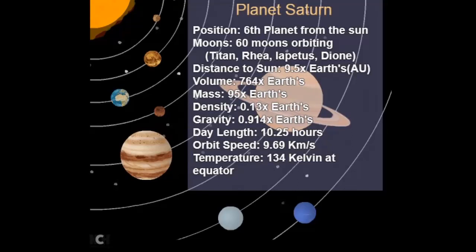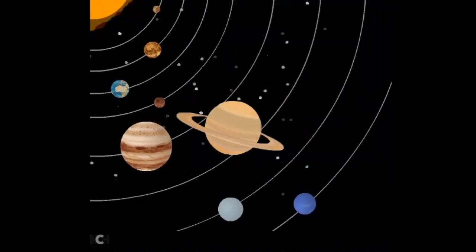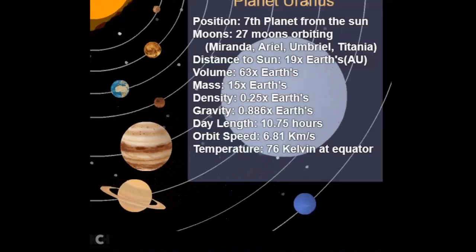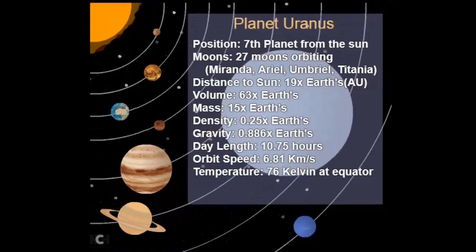The densities of the terrestrial planets average about five times the density of water, whereas the Jovian planets have densities that average only 1.5 times that of water.